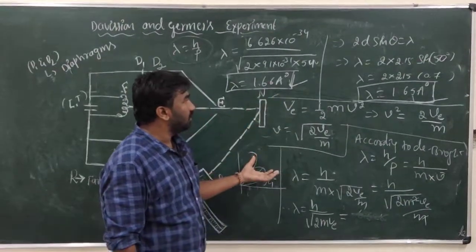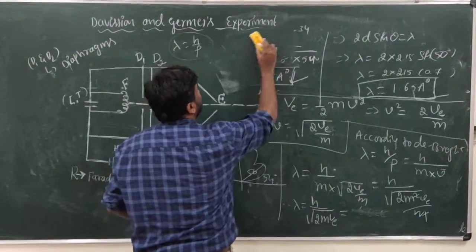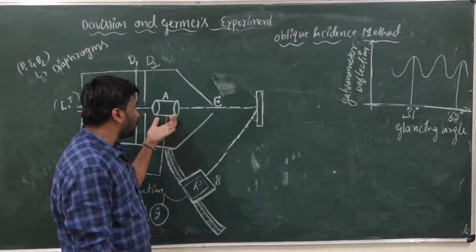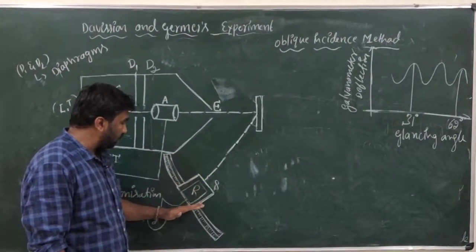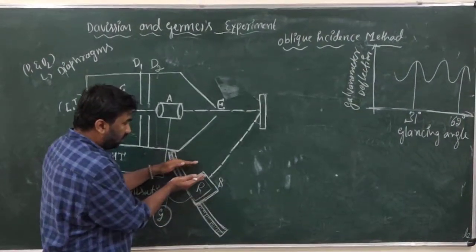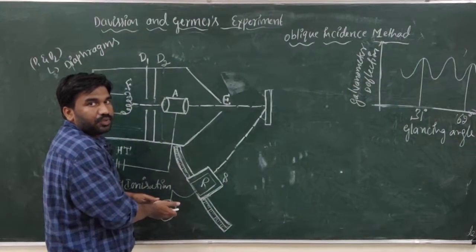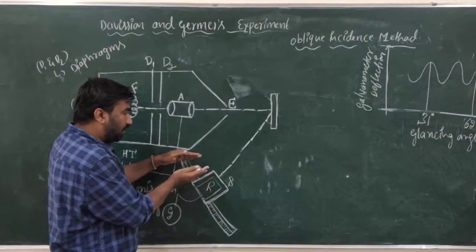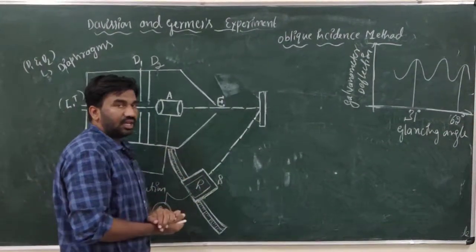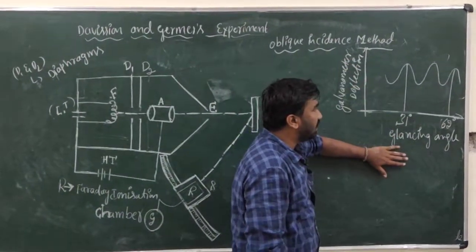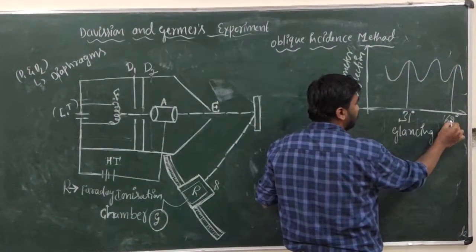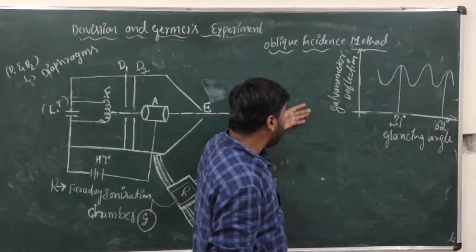This was verified by the normal incidence method. Now let us see the oblique incidence method. In the oblique incidence method, by keeping the accelerating voltage constant, we vary the galvanometer reading — that means we vary the angle of incidence and angle of scattering. The detector moves at different angles, and we record the ionization current at each angle. By plotting galvanometer detection versus glancing angles, we get humps. For theoretical calculation, I am taking θ₁ = 31° and θ₂ = 62°.